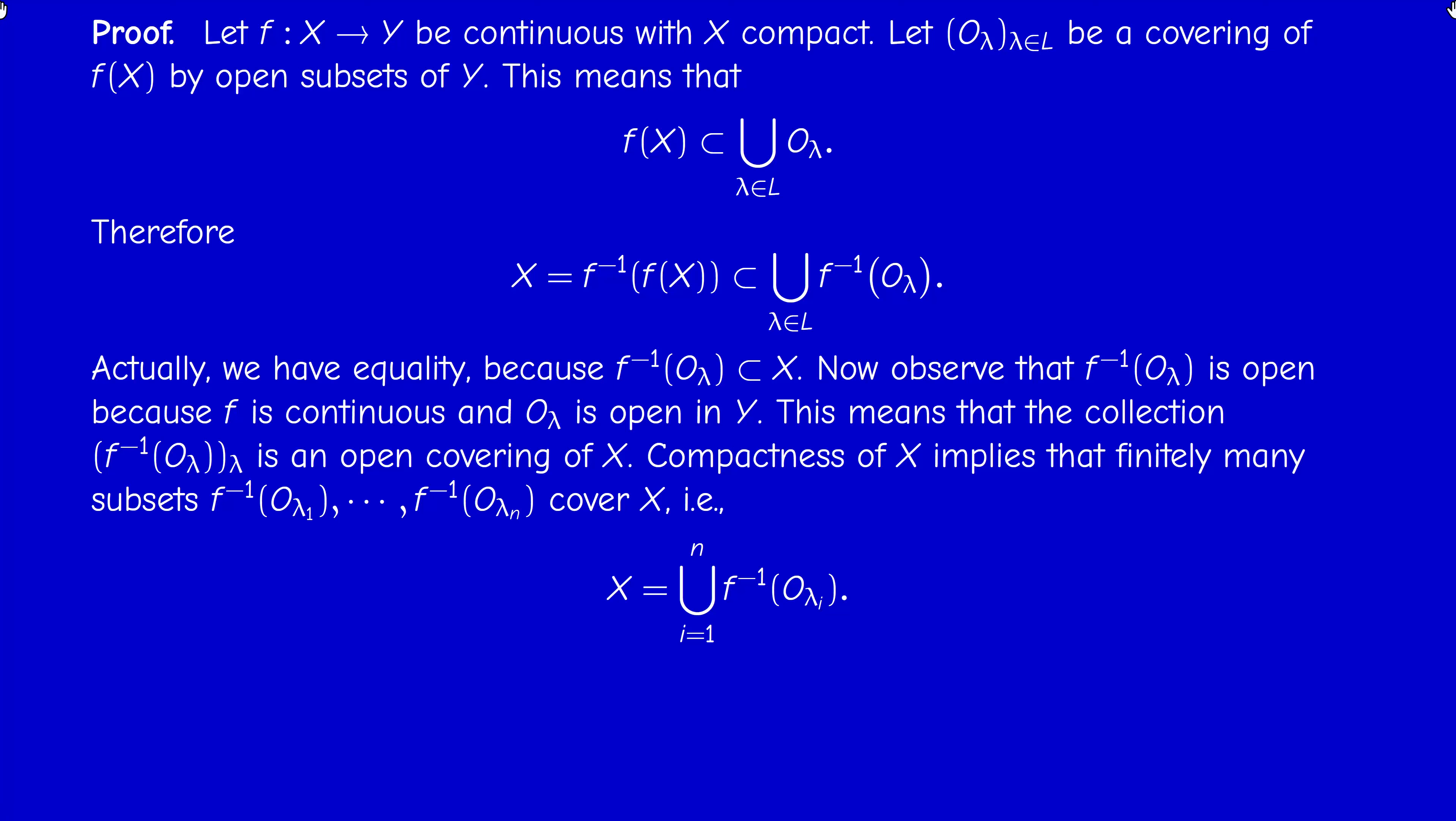I have a covering of X by open subsets of X, and compactness tells me that I can extract from this covering a finite sub-covering. So I can write X as a union of f^{-1}(O_{λ_i}). Now I take the direct image. So the direct image of the union is the union of the direct images. And f(f^{-1}(O)) is contained in O, with equality if f is surjective. So f(X) is contained in this finite union. This proves that by lemma 3.2, f(X) is compact.